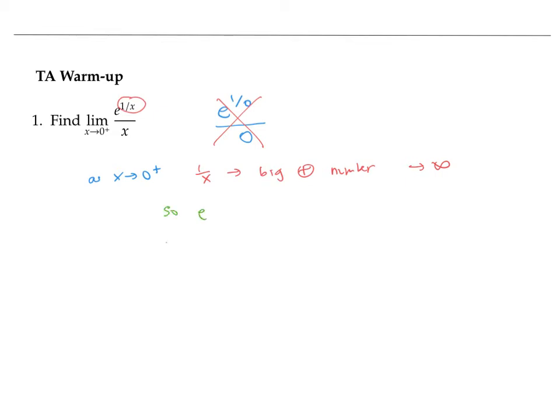All right, that's all good. But I actually want to figure out what e to the one over x goes to. So e to the one over x, well, one over x is going through big positive numbers. When I take e to a big positive number, I get an even bigger positive number.